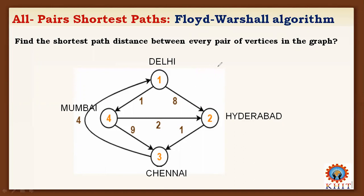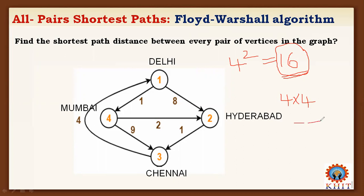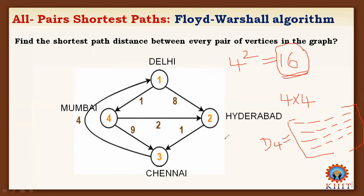Since there are 4 vertices, we get 4 squared — that is, 16 results in total. You can consider a matrix of size 4 by 4. The final distance matrix D4 will produce the shortest path from one node to another node. You need to find the distance from 1 to 1, 1 to 2, 1 to 3, 1 to 4; 2 to 1, 2 to 2, 2 to 3, 2 to 4; 3 to 1, 3 to 2, 3 to 3, 3 to 4; and 4 to 1, 4 to 2, 4 to 3, 4 to 4.